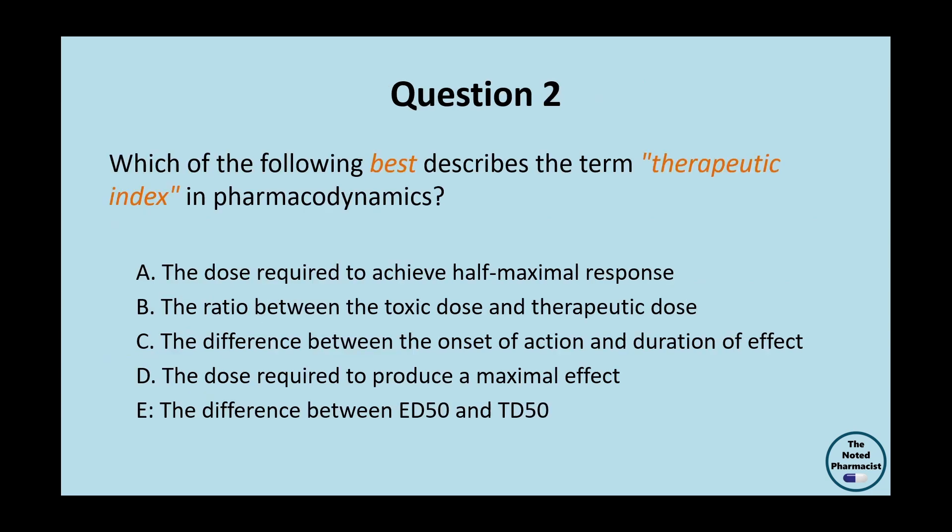Question 2: Which of the following best describes the term therapeutic index in pharmacodynamics? Option A: The dose required to achieve half-maximal response. Option B: The ratio between the toxic dose and the therapeutic dose. Option C: The difference between the onset of action and duration of effect. Option D: The dose required to produce a maximal effect. Option E: The difference between ED50 and TD50.